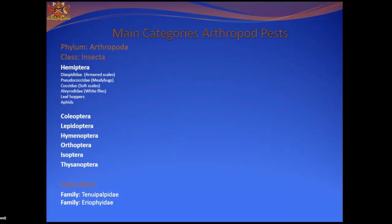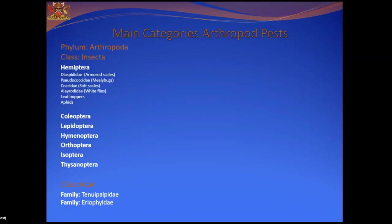In order to look at these pests on coconut, we can put them into categories — arthropod pests. Arthropods belong to the animal kingdom and are placed in classes. We have the class Insects and the class Arachnids. Under the class of insects, there are a number of orders. Hemiptera includes the armored scales or Diaspididae, pseudococcid mealybugs, coccid soft scales, whiteflies, leafhoppers, and aphids.